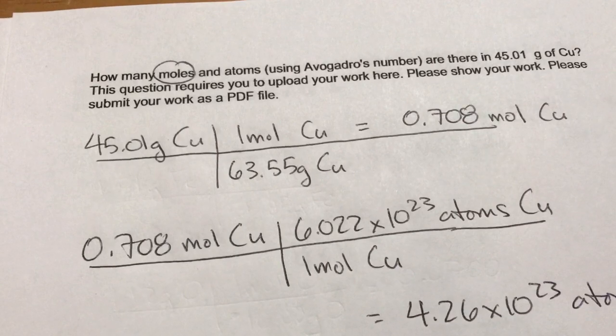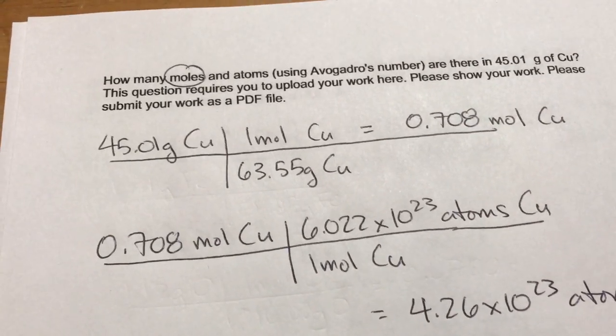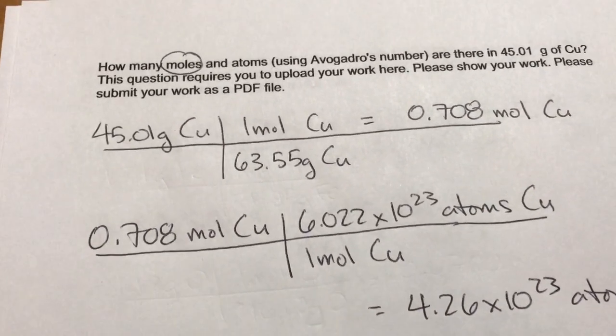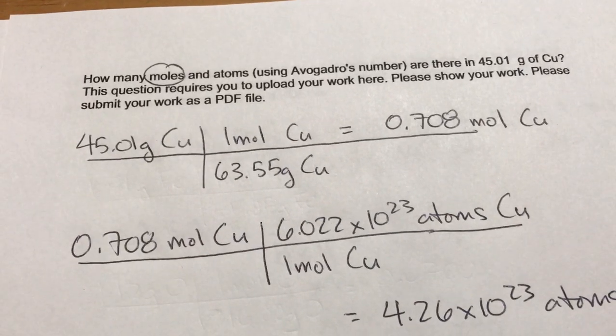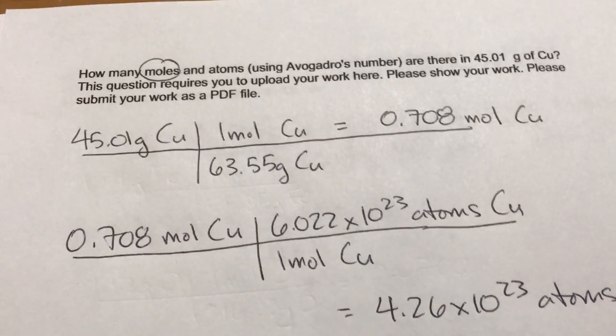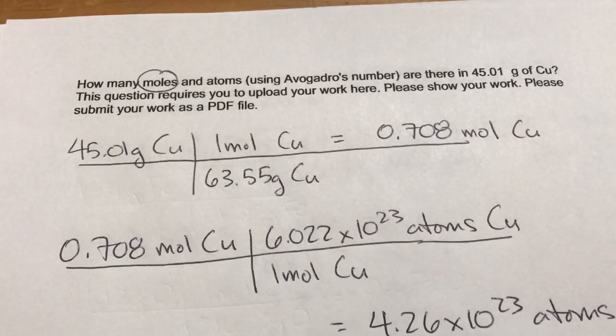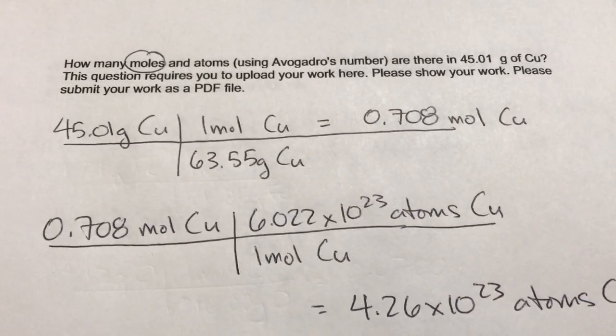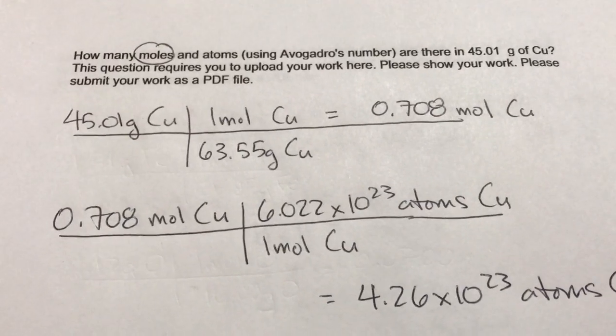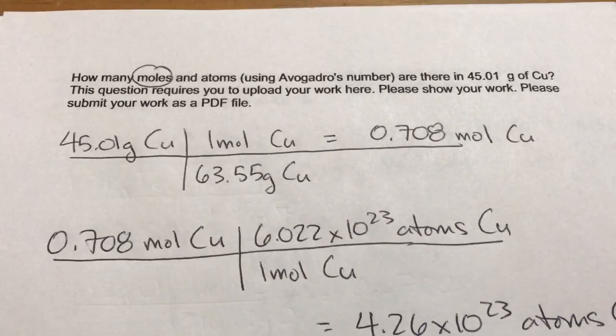And then mathematically we divide 45.01 by 63.55 to get 0.708. I've rounded this to three sig figs, and that's always good for lecture, homework, quizzes, and anything else except lab.